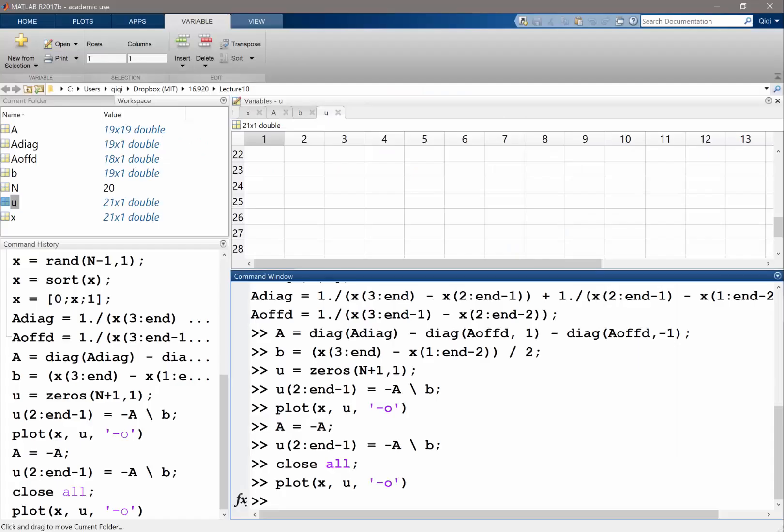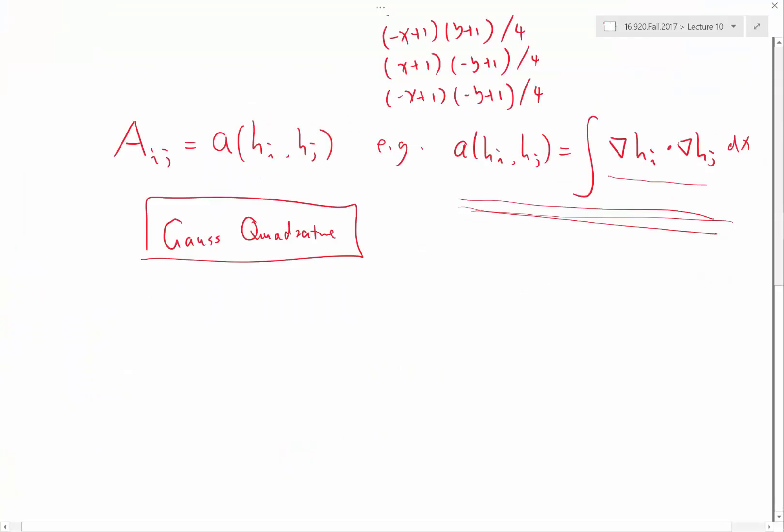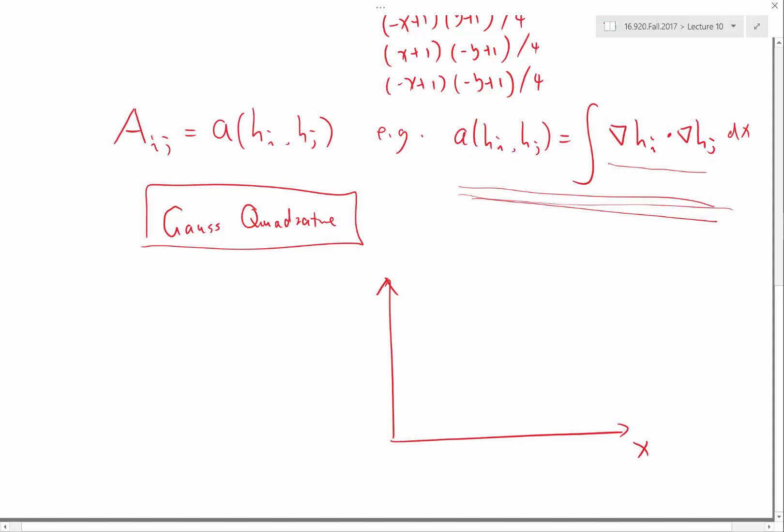So Gauss quadrature is actually quite interesting. It basically approximates a function. It approximates actually not the function itself, but the integral of this function. Let's start in 1D. It approximates an arbitrary, it approximates the integral of this function using the integral over several delta functions. So integration over, let's say a and b, of f(x) dx, it basically approximates as an integral of several delta functions.